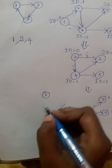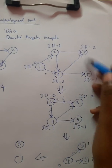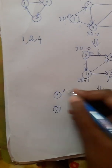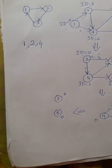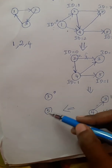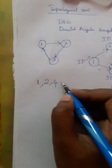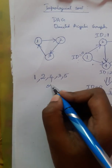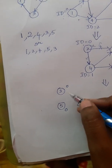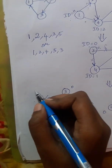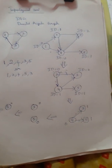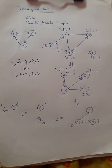After deleting node 4, only the arrow from 3 to 5 remains. Node 3 and node 5 both have in-degree 0. We can eliminate either one — it's our choice. Eliminating 3 first gives result: 1, 2, 4, 3, 5. Alternatively, eliminating 5 first gives 1, 2, 4, 5, 3. This is the simple method for calculating topological sorting.